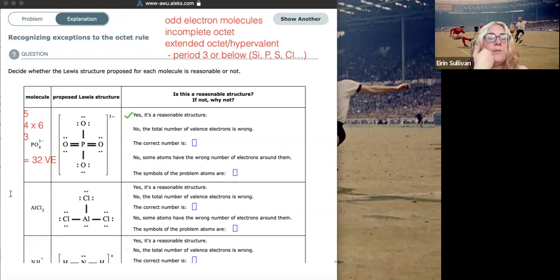So next question, aluminum chloride. So aluminum, group 13, three valence electrons, three chlorines, each of them have seven valence electrons. So that is, we have a total of 24 valence electrons we're looking for here. All right. So let's have a count up of what's been drawn. 2, 4, 6 in bonds, 8, 10, 12, 14, 16, 18, 20, 22, 24. And that lone pair on the aluminum takes us to 26.